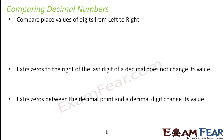Now we have certain set of rules which will help us to very easily compare decimal numbers. The first rule says: compare place values of digits from left to right. Let us take examples.